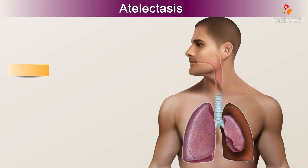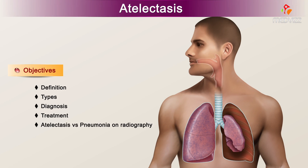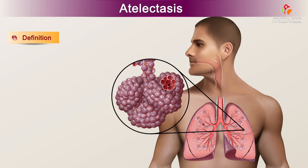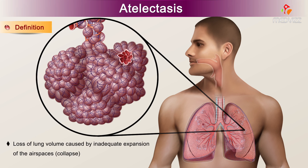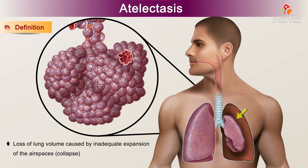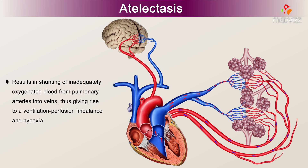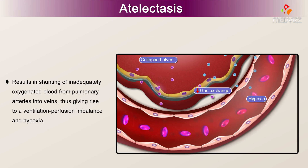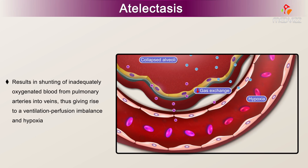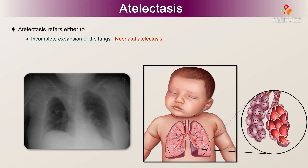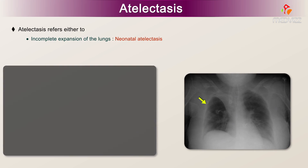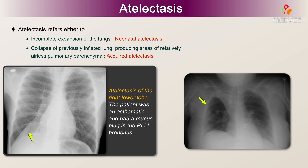Atelectasis — Definition. Atelectasis is the loss of lung volume caused by inadequate expansion of the air spaces, resulting in collapse. It results in shunting of inadequately oxygenated blood from pulmonary arteries into veins, giving rise to a ventilation-perfusion imbalance and hypoxia. Atelectasis refers either to incomplete expansion of the lungs or to the collapse of previously inflated lung, producing areas of relatively airless pulmonary parenchyma.